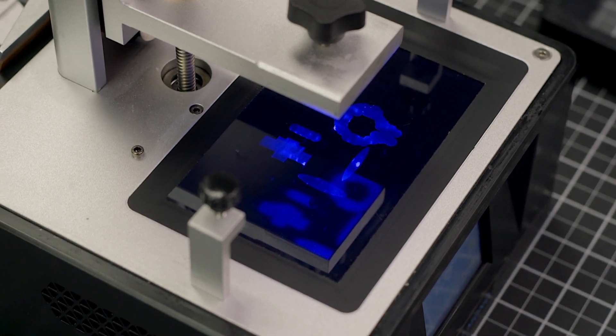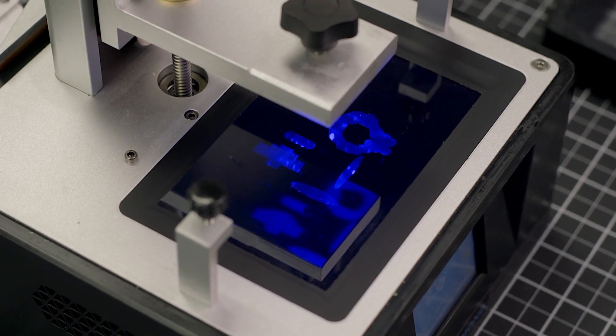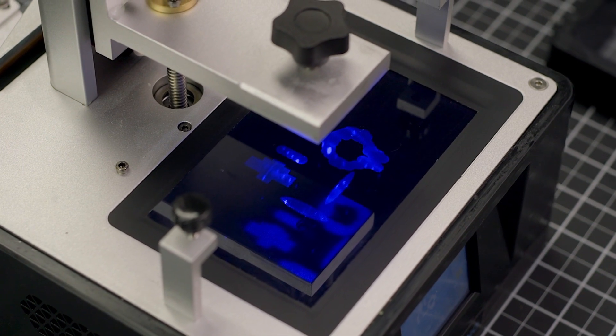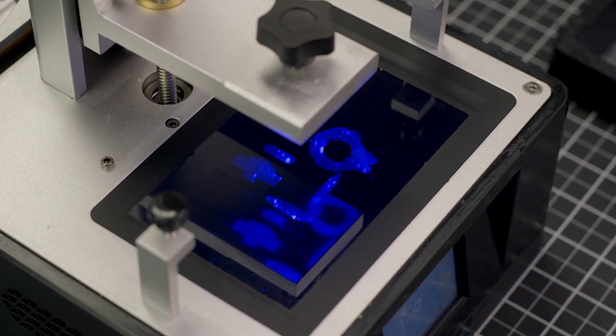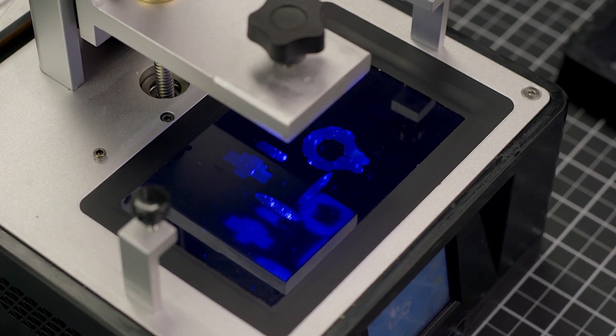This is done by using an LCD screen to display cross sections of the finished 3D print in sequential order to let UV light pass through the LCD from the UV LEDs in the base, hardening the resin.